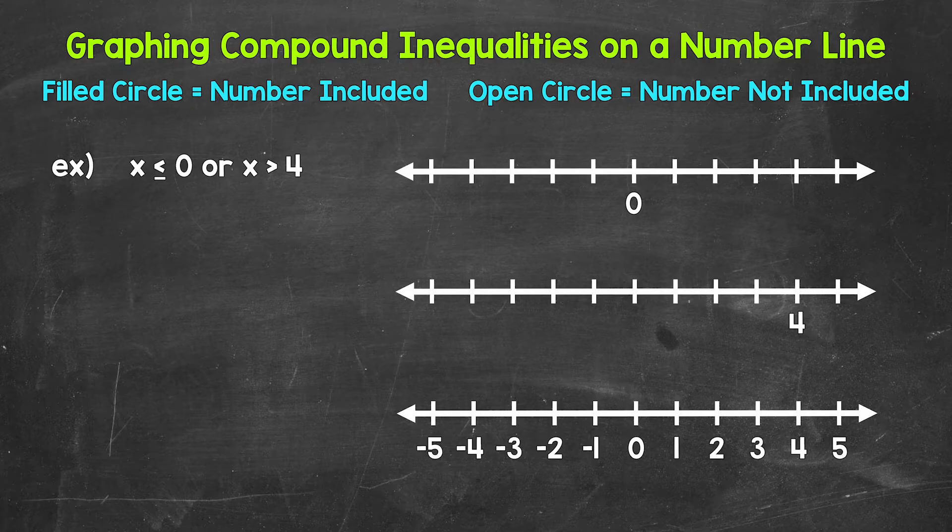A solution of a compound inequality involving OR is anything that makes either inequality true. So basically, this must be true OR that must be true.